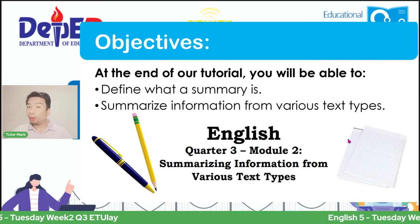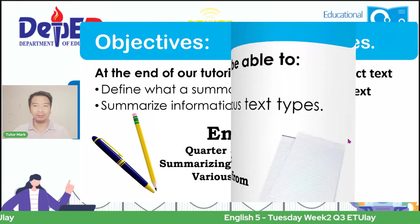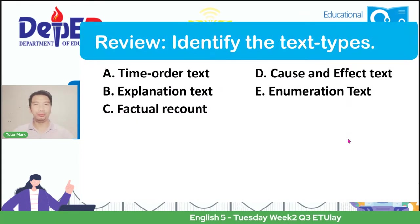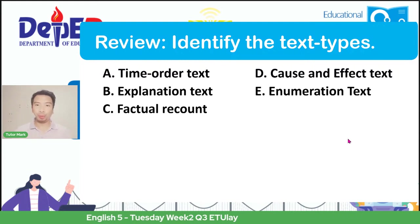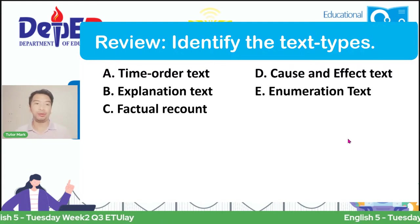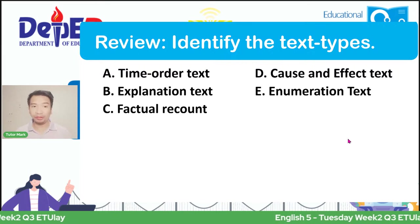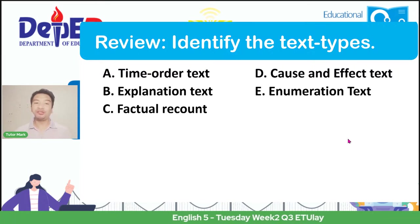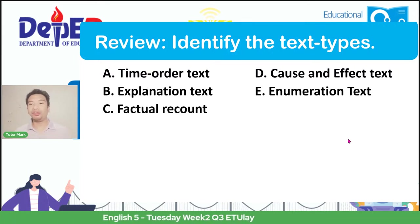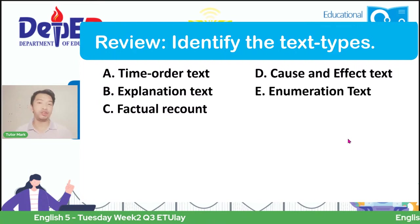So if you are ready, hit like or heart. Let's have first a review. Last week, we identified the different text types: we have the time order text, the explanation text, the factual recount, the cause and effect text, and the enumeration text.